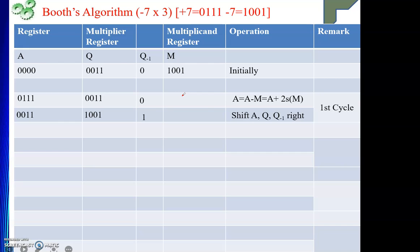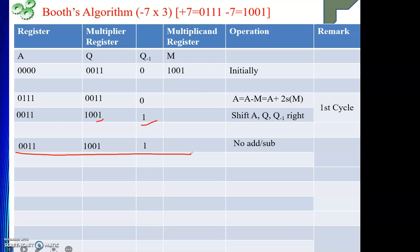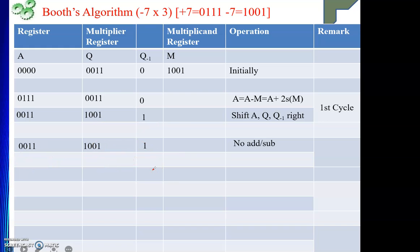Count is now 3, so we repeat. The two consecutive bits Q zero and Q minus one are both 1 — they are the same — so no addition or subtraction is needed. We simply carry the current register values forward. Then we perform ASHR: A becomes 0 0 0 1, and the bits shift through Q and Q minus one accordingly, giving Q as 1 1 0 0 and Q minus one as 1. Second cycle is complete.